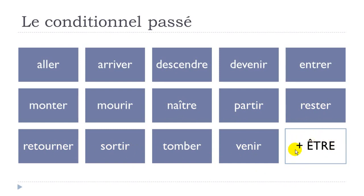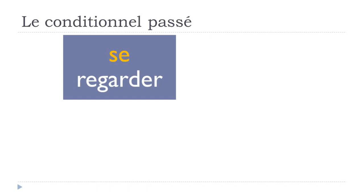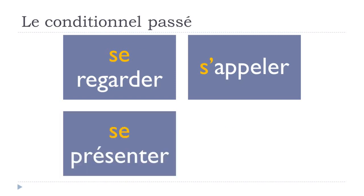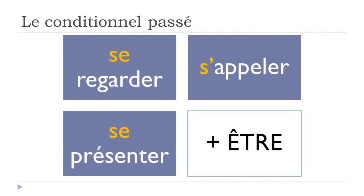So remember: être should be conjugated at the conditionnel présent for the conditionnel passé. The other group requiring être are the reflexive verbs — les verbes réfléchis — such as se regarder, s'appeler, se présenter. These also require être for the conditionnel passé, just as they do for the passé composé. It's always the same rule.